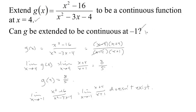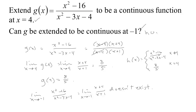So can g be extended to be continuous at negative one? No. Can it be extended to be continuous at four? Yes. So you just make a function that is a little bit more broadly defined: it would be the original value as long as x isn't four, and if x is four then the value of the function should be eight fifths so that the limit as you approach four matches the value of the function at four. Of course that would be the same as just making h be x plus four over x plus one. You still can't remove that discontinuity at negative one.